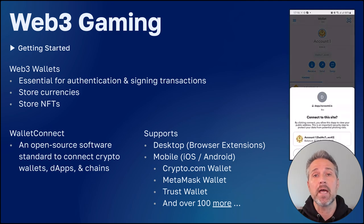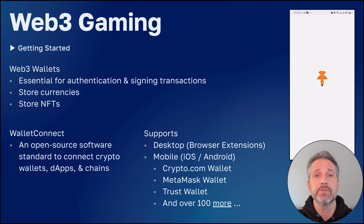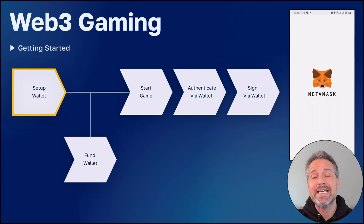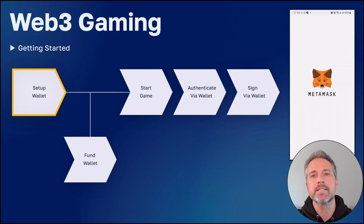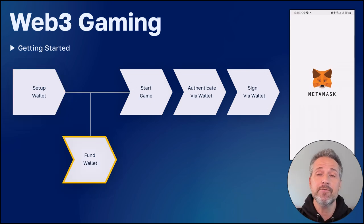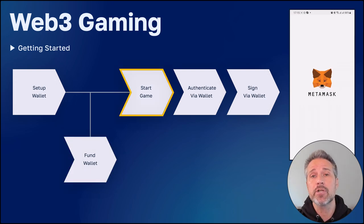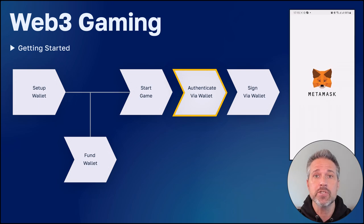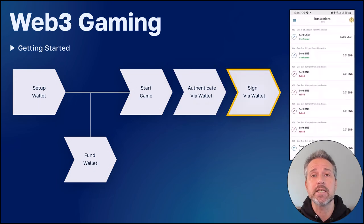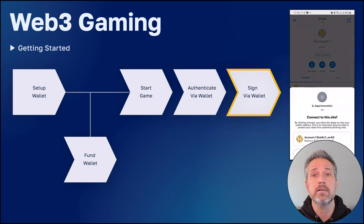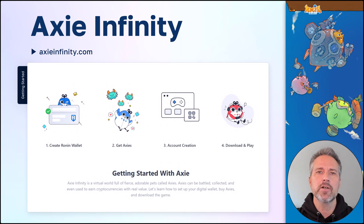And you can see on the right, MetaMask, which was one of the popular examples. The process of getting started in a particular game using the wallet depends, but most follow a flow: setting up the wallet, then funding the wallet if the game needs currency to get started, then you'd start the game, authenticate using the wallet, and periodically throughout the life of that game you'll need to sign certain key transactions — things that are on-chain and immutable.